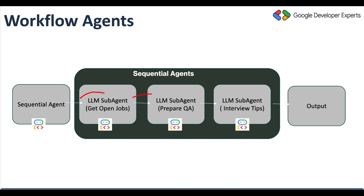The list of open positions is passed to the second sub-agent, which creates a list of interview questions and answers based on those positions. Both pieces of information are then passed to the third agent, which gives you interview tips based on the open job positions and the interview Q&A. The final output includes job positions, question answers, and interview tips. That was the overview of the architecture we are going to implement.